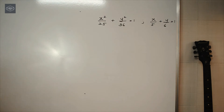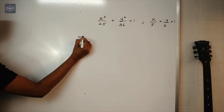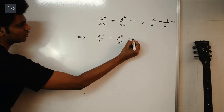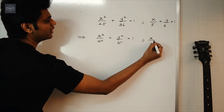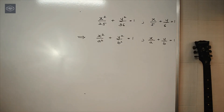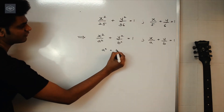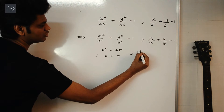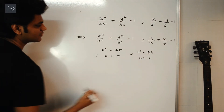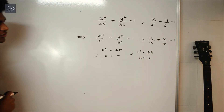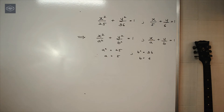We compare these with the standard equations: x²/a² + y²/b² = 1 for the ellipse and x/a + y/b = 1 for the straight line. For the ellipse, a² = 25 so a = 5, and b² = 36 so b = 6. You can verify these values from the line equation as well. The shortcut to find the area between an ellipse and a straight line is (1/4)πab − (1/2)ab.